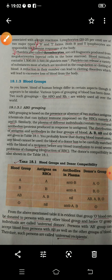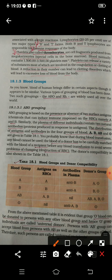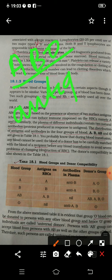First we are going to look at ABO blood grouping. Before getting into ABO blood grouping, we have to know two things: there is a thing known as antigen, and another is antibody.